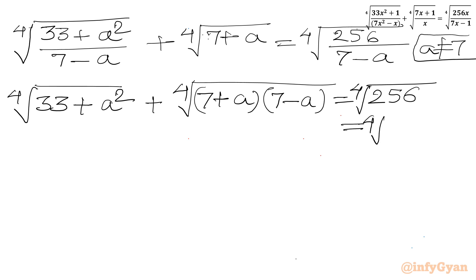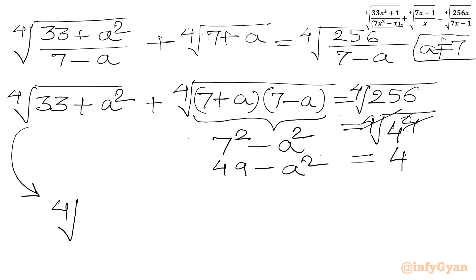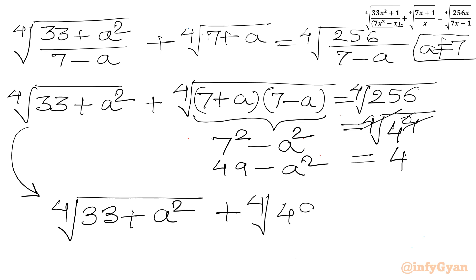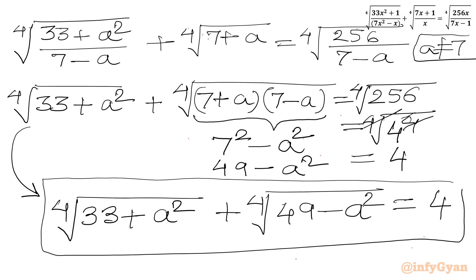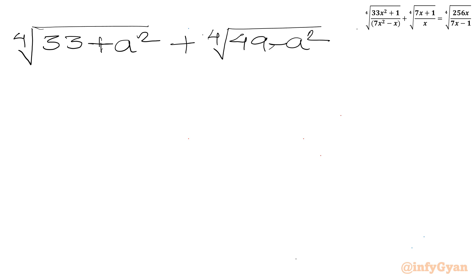Now the right-hand side: 256 is 4 to the power 4, so the 4th root and power 4 cancel, giving RHS equal to 4. And the radicand (7 plus a)(7 minus a) using the difference of two squares identity gives 7 squared minus a squared, or 49 minus a squared. So our equation becomes: 4th root of (33 plus a squared) plus 4th root of (49 minus a squared) equals 4.